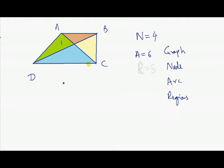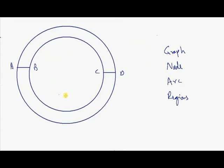Now our task here is to find the number of nodes, number of arcs and number of regions. How many nodes are there? One, two, three and four nodes are there. So number of nodes N is four.